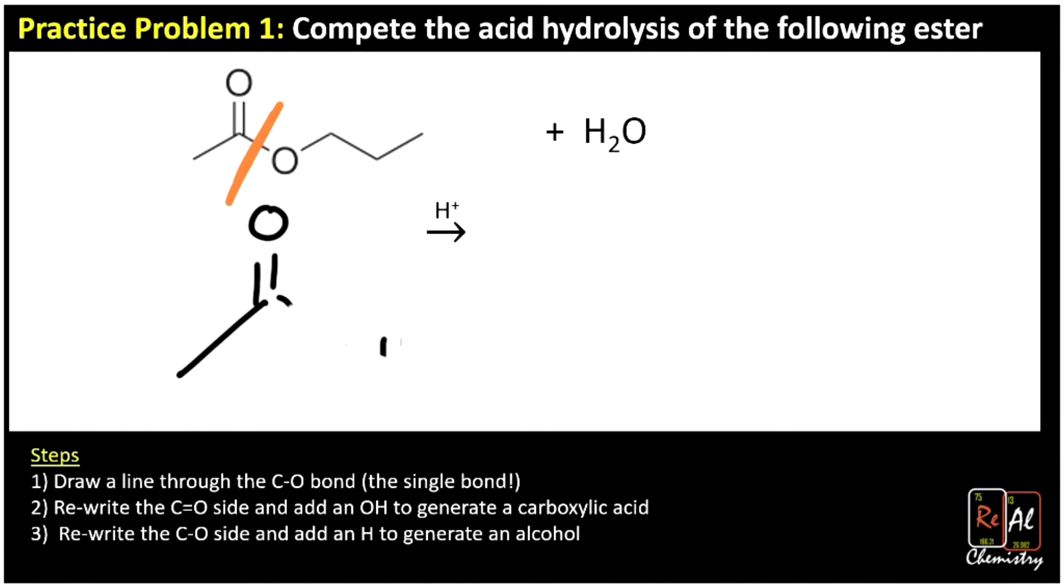Now, when I say add an OH, what I mean is you're going to start by just getting to this point where you have the C double O bond, and now we're going to go down and add an OH that came from the water. And now we're going to write our alcohol half. We'll start with the oxygen and go up, down, up, and we're just going to tack a hydrogen on. So this H2O became this OH and H, and that's exactly how we split an ester in half with acid hydrolysis of an ester.